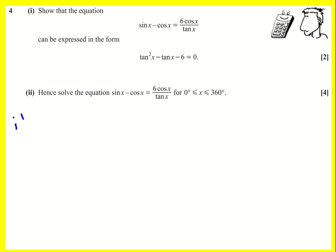Okay, in the first part of this question, we've got a trigonometric equation. We're trying to show that it's a hidden quadratic in tan squared.